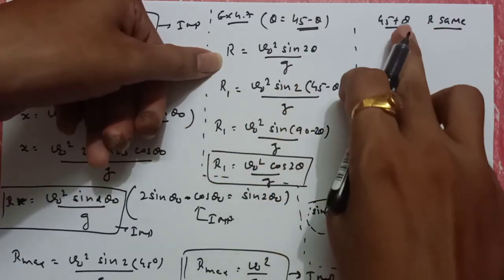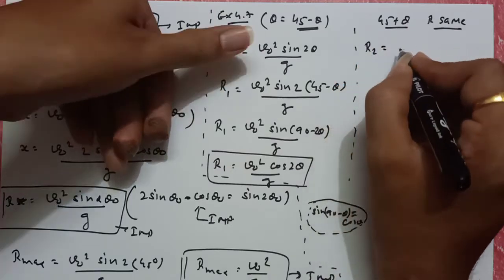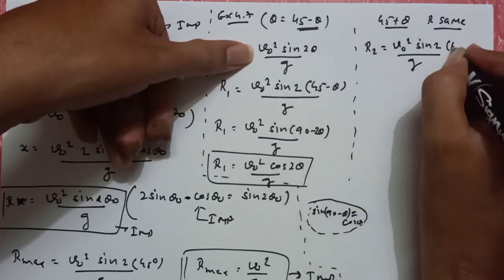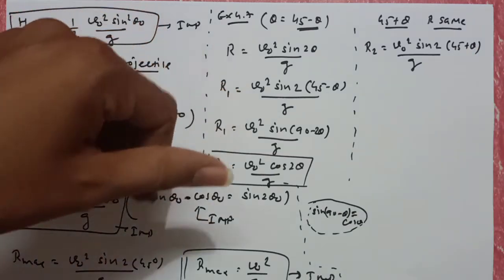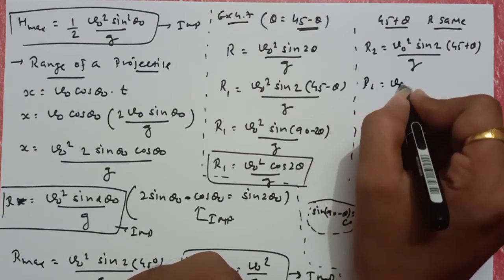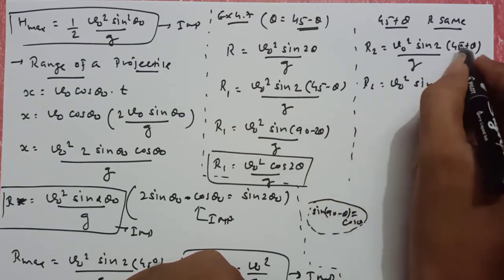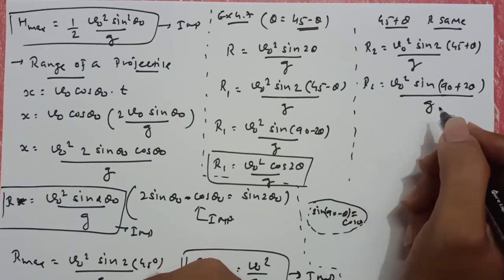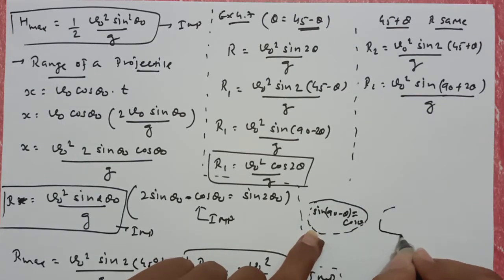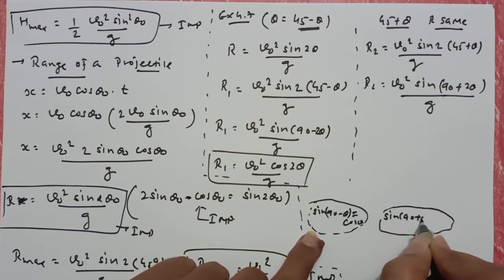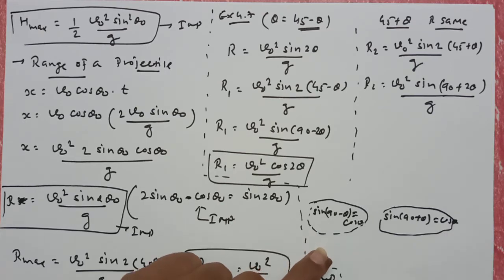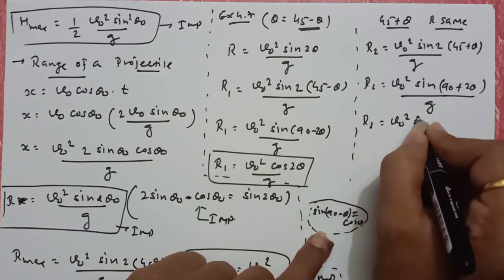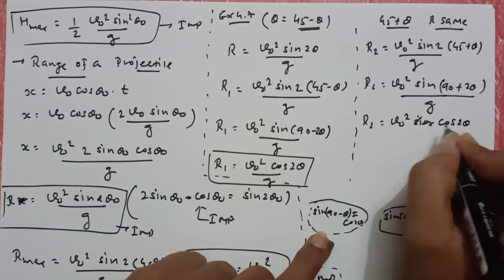अब वो ही range की formula में मैं 45 plus theta रखता हूँ। Suppose उस case में मुझे range मिलती R2. Formula होगा V0 square sin 2(45 plus theta) by G, so R2 is equal to V0 square sin(90 plus 2 theta) by G. यहाँ पर एक और formula याद रखो: sin(90 plus theta) भी cos theta होता है। तो यहाँ पर sin(90 plus 2 theta) directly cos 2 theta by G हो जाएगा।